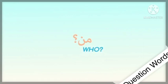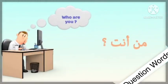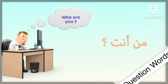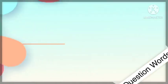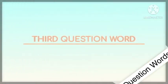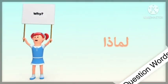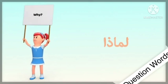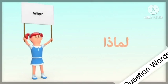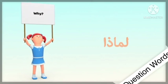The second question word is 'man,' which means 'who.' Let's see an example: 'Who are you?' In Arabic that is 'man anta.' Let's repeat: 'man anta.' The third question word is 'why,' which means 'limaza.' Let's repeat: 'limaza.'